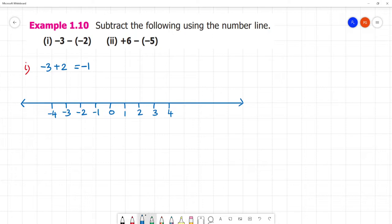Minus 3, minus 3, minus 4, minus 3. This way minus 3. Plus 2 - move right hand side. That is 1, 2. So what is the answer? Answer is minus 1. Clear.